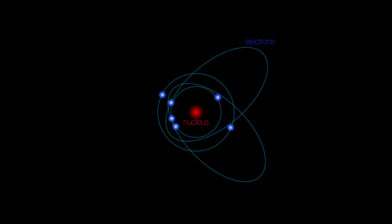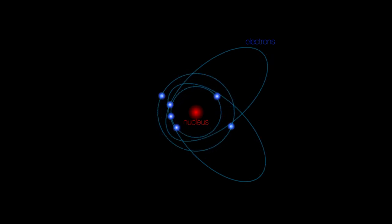Let's start with the good old atom, the basic building block of all the stuff in the universe. An atom is made of fundamental particles called electrons in orbit around a tiny positively charged nucleus. The electron is a fundamental particle, which means it gets its mass from the Higgs field. So if we turn the Higgs field off, that means the electron suddenly becomes massless.